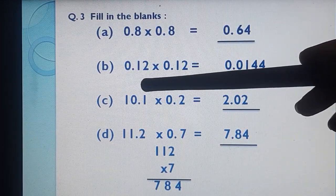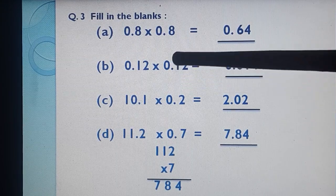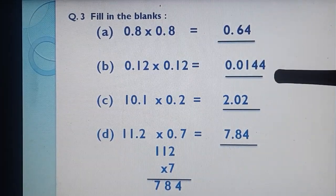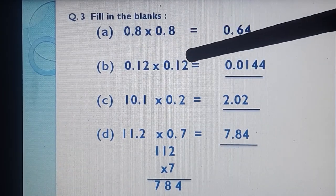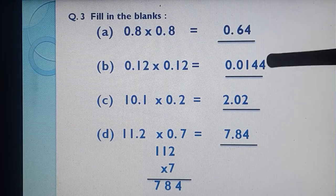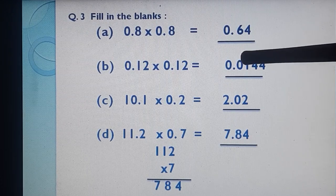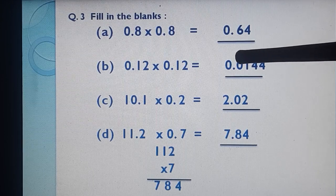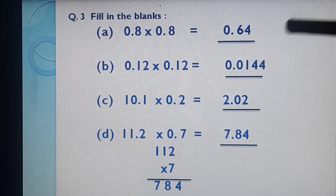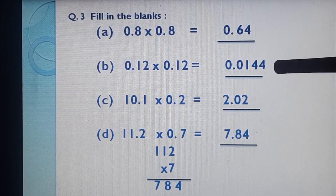Part B: 0.12 × 0.12. 12 × 12 = 144. After decimal: 1, 2, 3, and 4 digits total. So start counting in the product from the last place: 1, 2, 3, 4 — but 144 has only 3 digits, so we put a 0. So counting 4 places from the last and putting the decimal gives 0.0144.